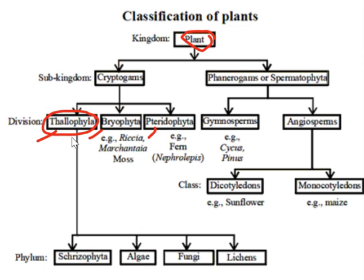These Thallophyta are further divided into four phyla: Thallophyta, Algae, Fungi, and Lichens.